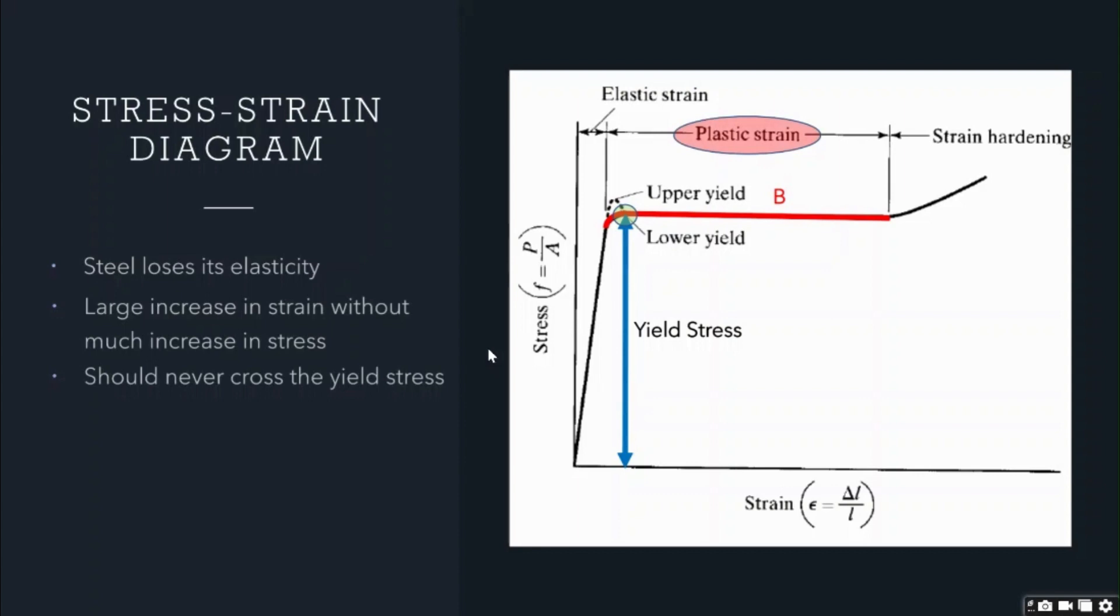The total strain in steel in region B of the diagram is called the plastic strain. If we remove the loading from the object, it would never come back to its original position and the deformation would be permanent or plastic.